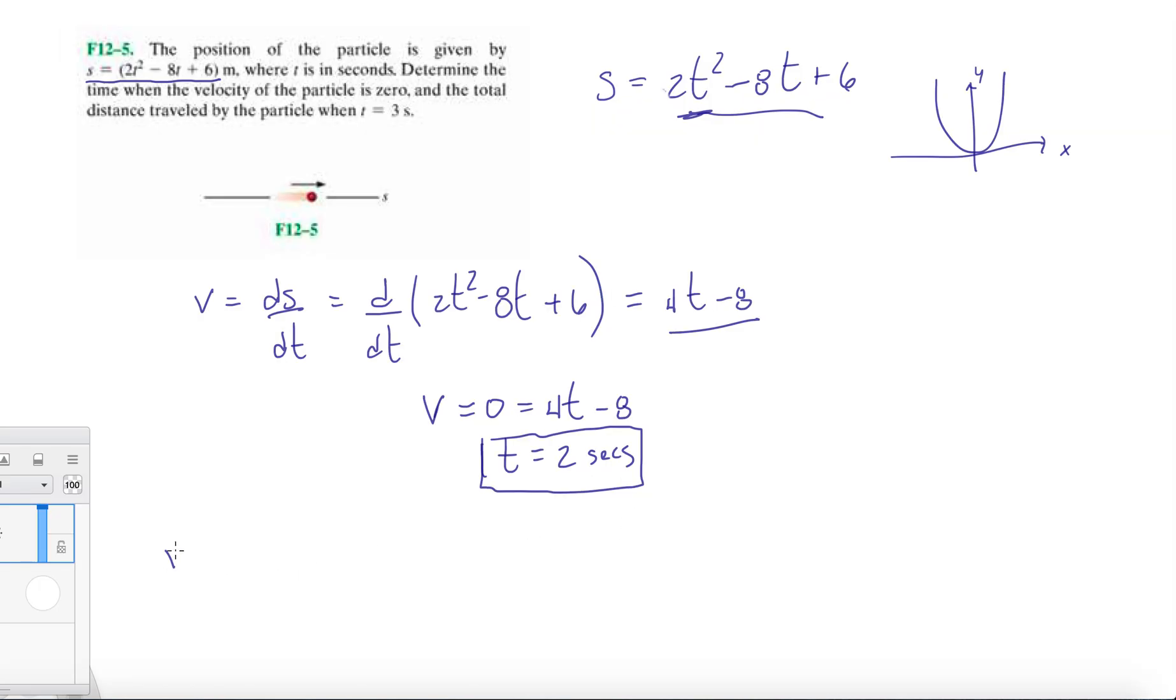We're going to find this by just plugging in. The position at time equals 0 gives us 6 meters. The position at time equals 2, that's 2 times 2 squared, so that's 4, minus 16, plus 6 - minus 10, so that's minus 2. So our absolute displacement between time equals 0 and time equals 2 is going to be minus 2, so final position minus initial position, which is minus 6 in absolute terms. We have 8 meters.